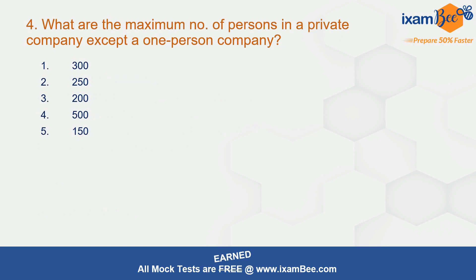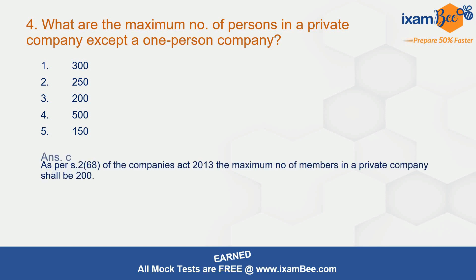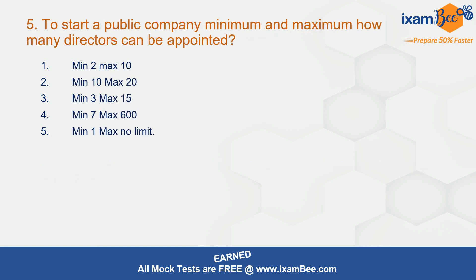Question 4: what are the maximum number of persons in a private company, except a one-person company? The correct answer is C — 200. As per section 2(68), the maximum number of members in a private company can be 200.